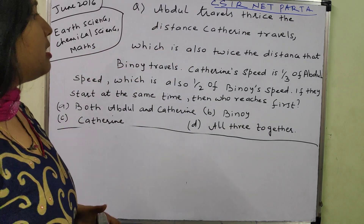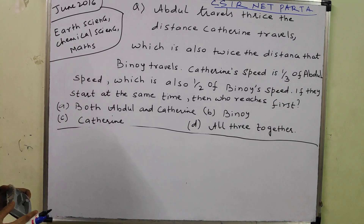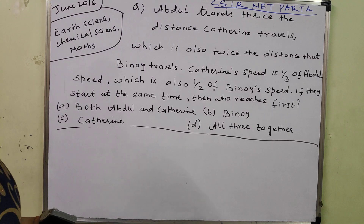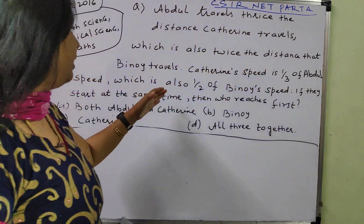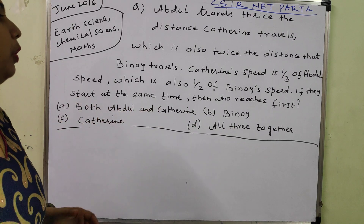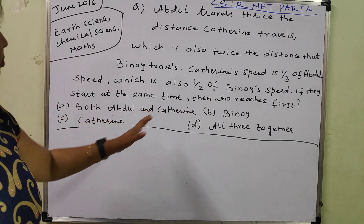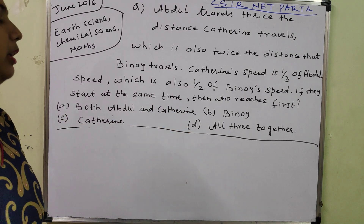Further, Catherine's speed is one third of Abdul's speed, which is also half of Benoit's speed. This part is talking about the speed of Catherine, Abdul and Benoit. If they start at the same time, then who reaches first — Benoit, Catherine, or all three together?